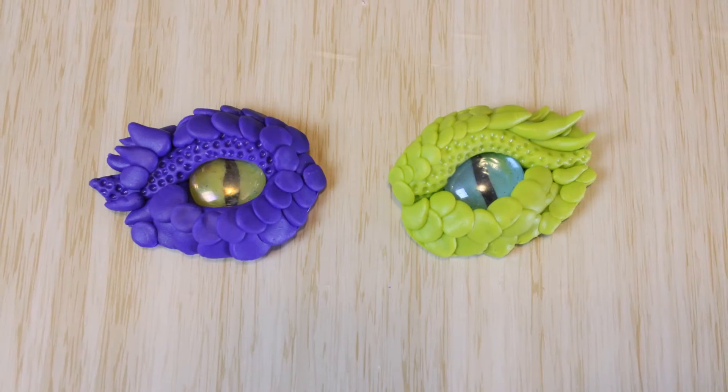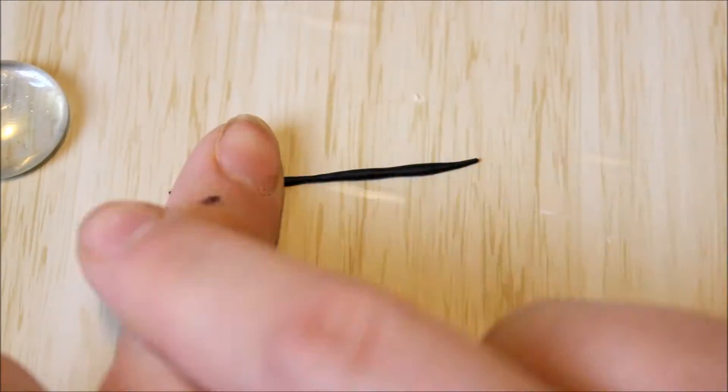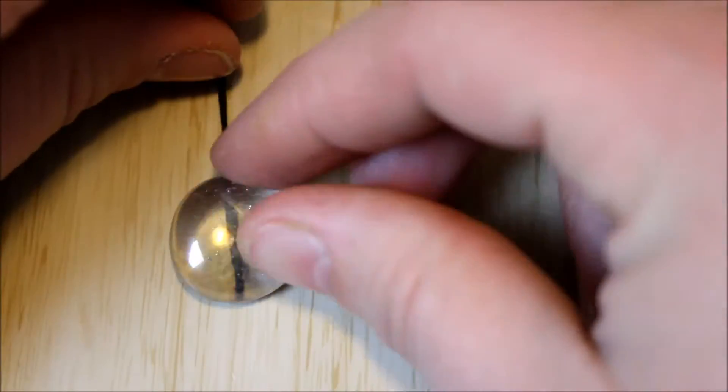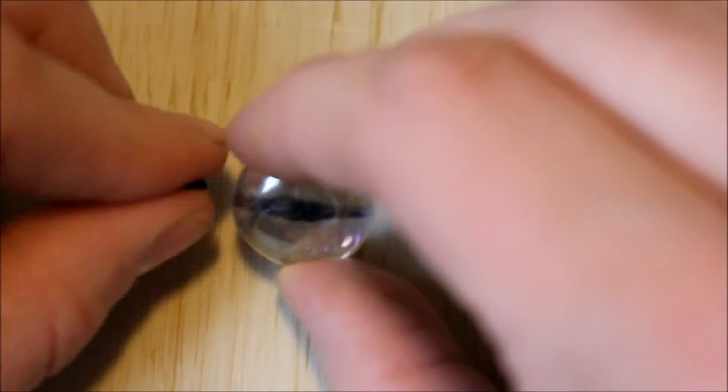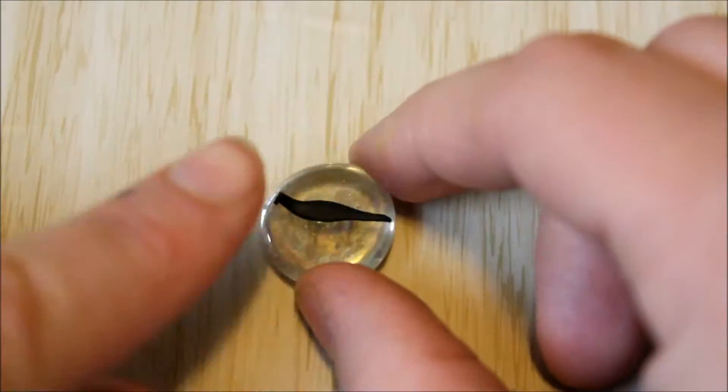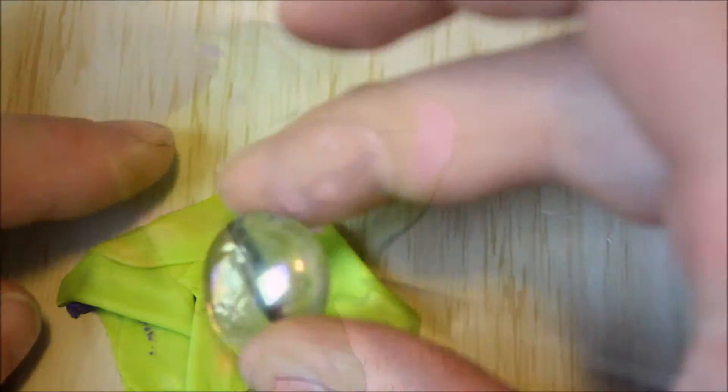To make your very own dragon eye you'll need some polymer clay in the color of your choice and a little snake of black clay to create the pupil. To create the actual eyeball I'm using a little glass pebble here that you can find at any good craft shop or any sort of discount store.